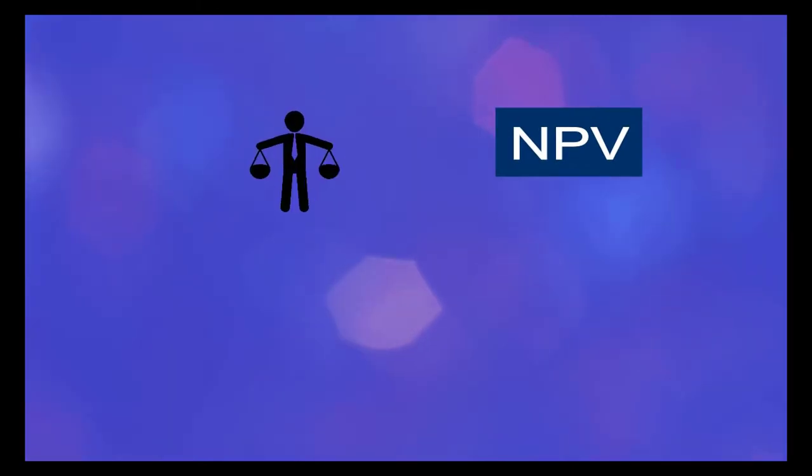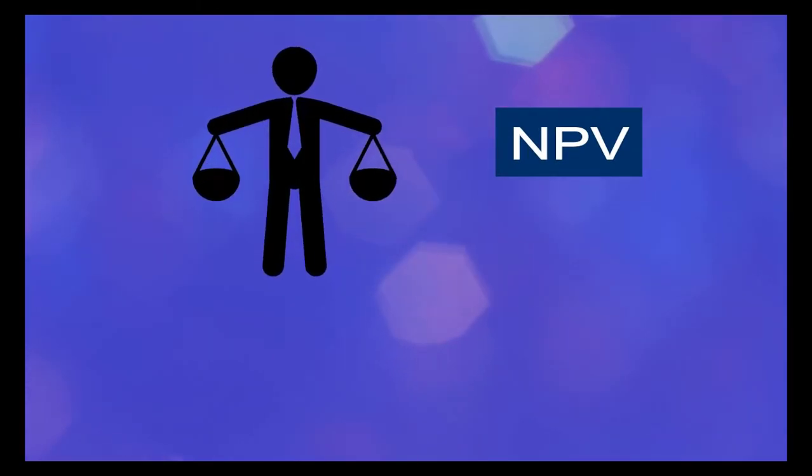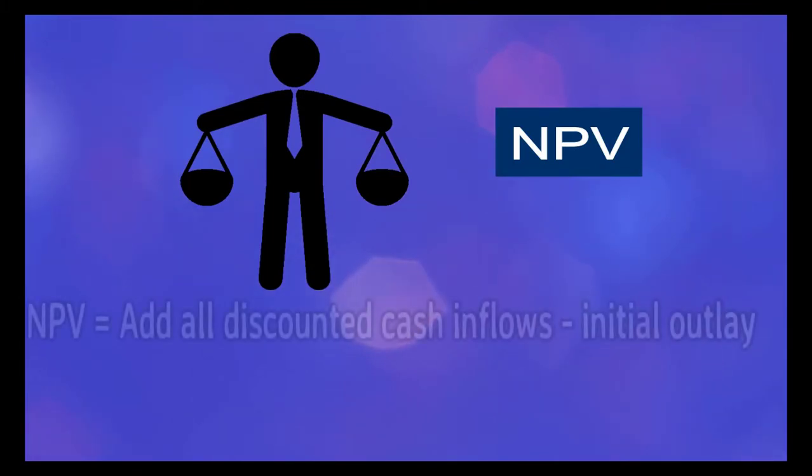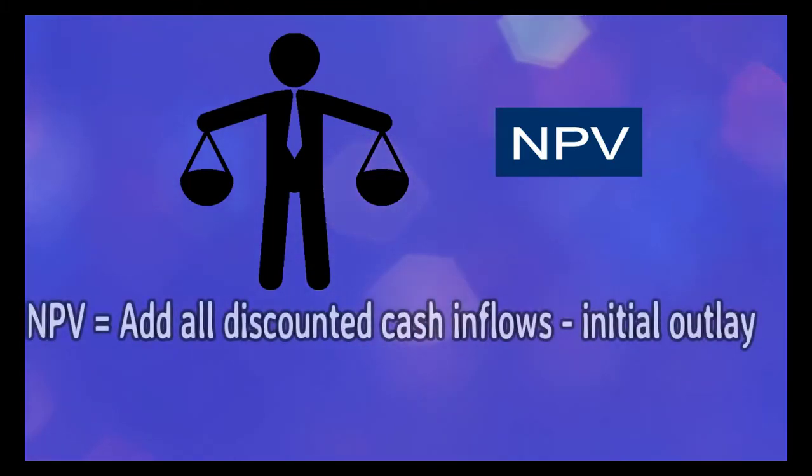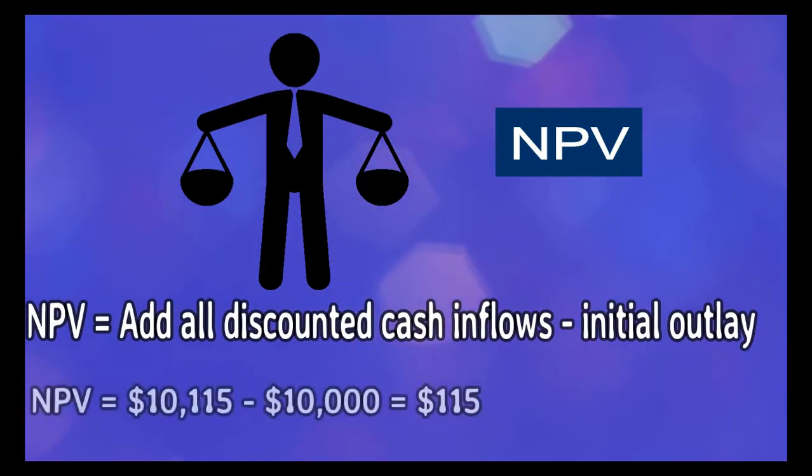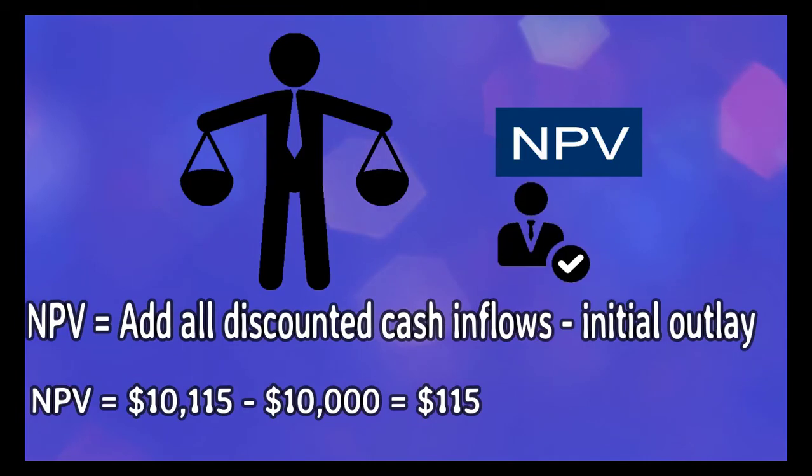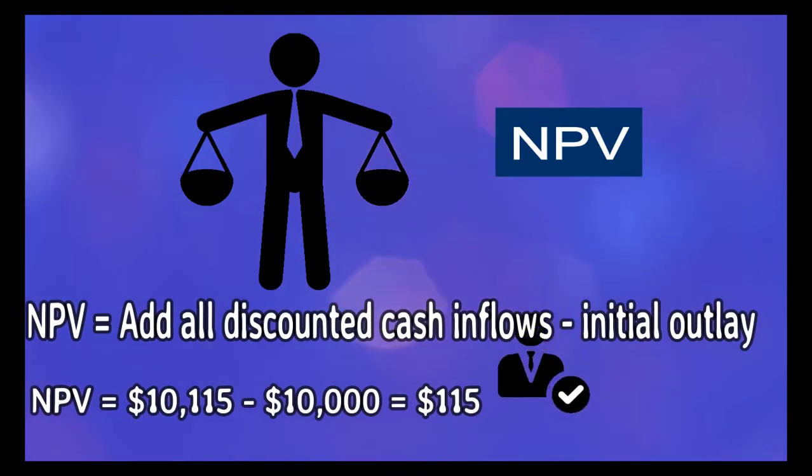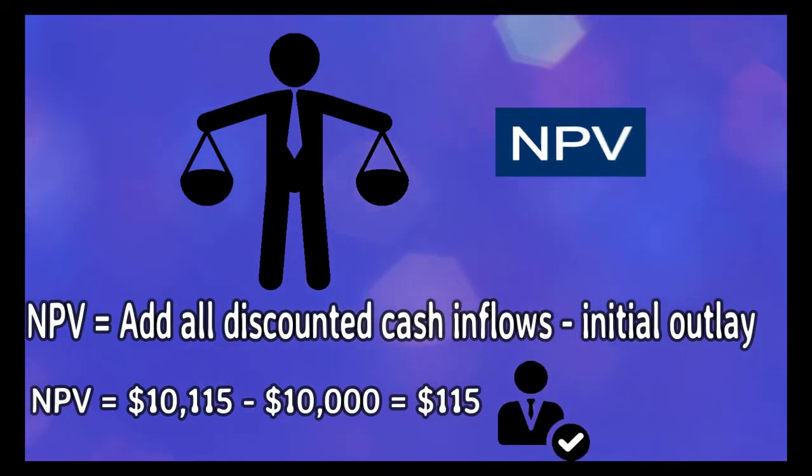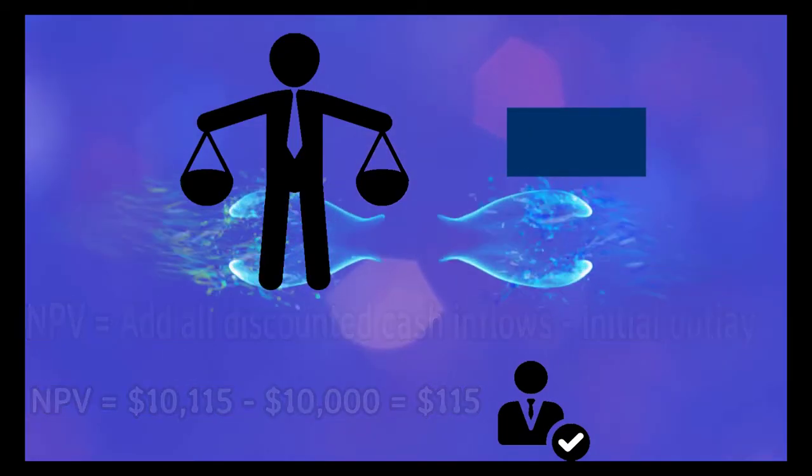From this point we can calculate the NPV of this project to assess whether this project is worthy for you or not. To calculate NPV, we use this formula. The sum of all discounted cash inflows is $10,115 less $10,000 as initial outlay, giving us an NPV of $115. That means you have taken a wise decision.